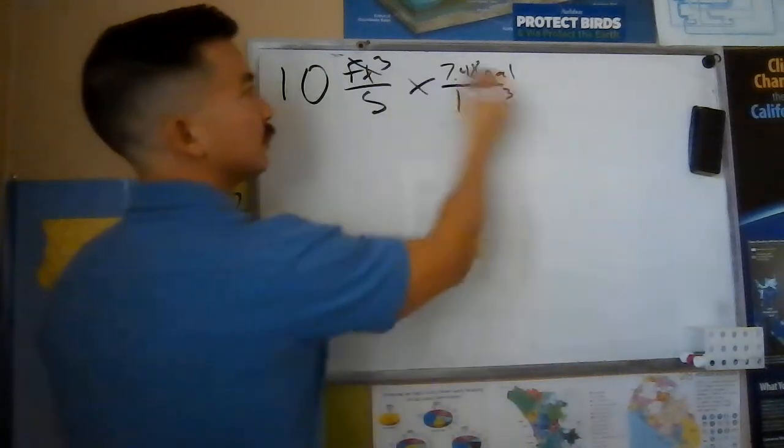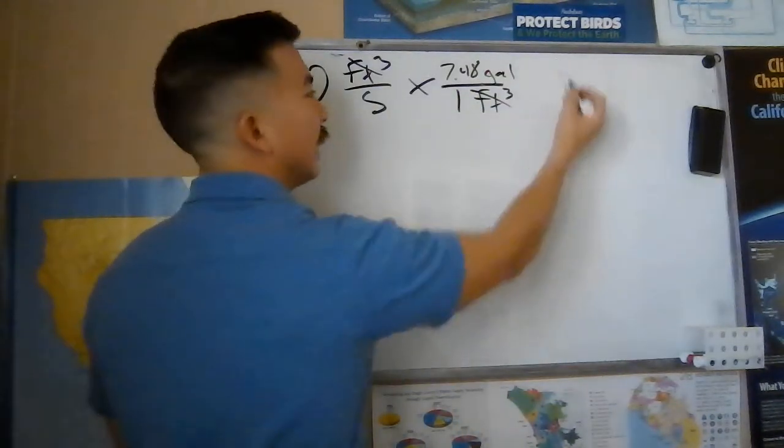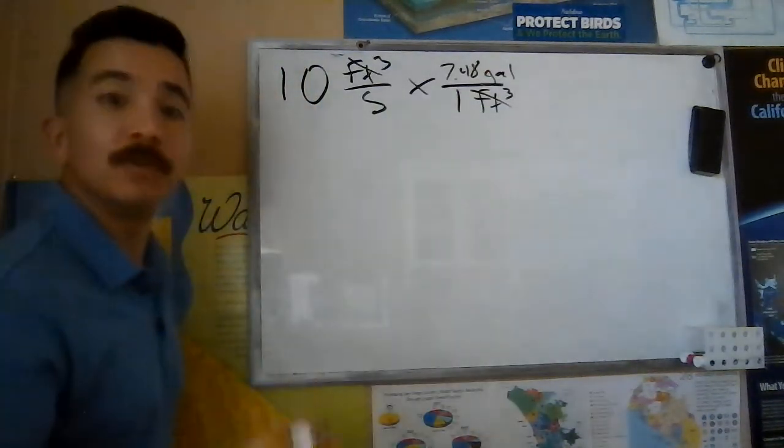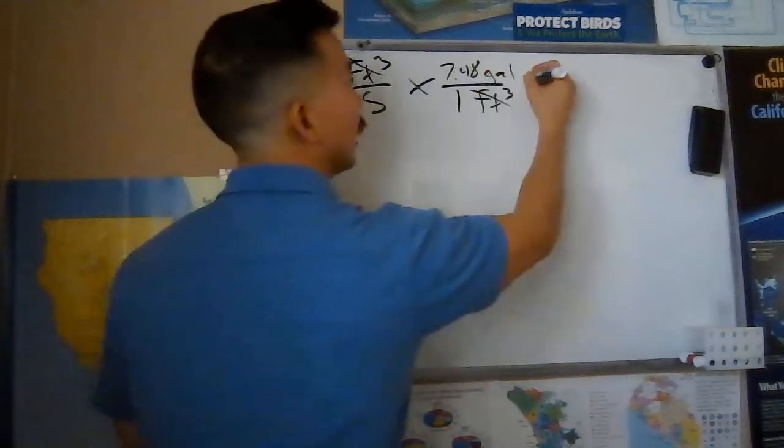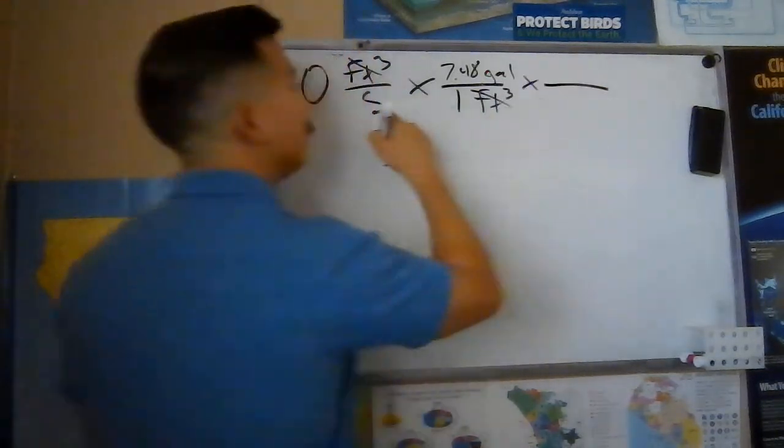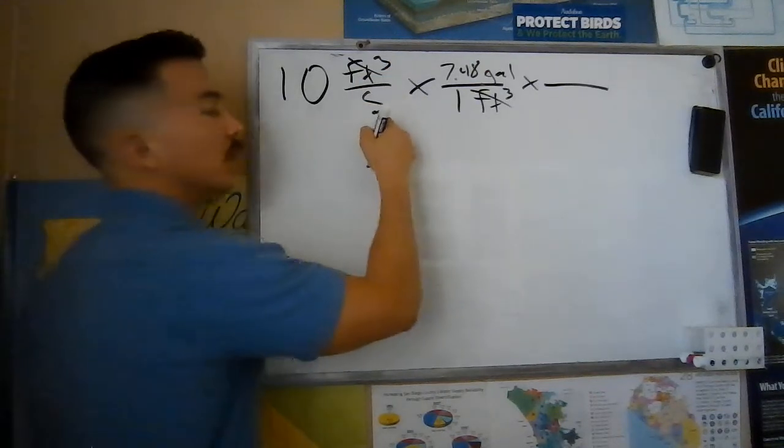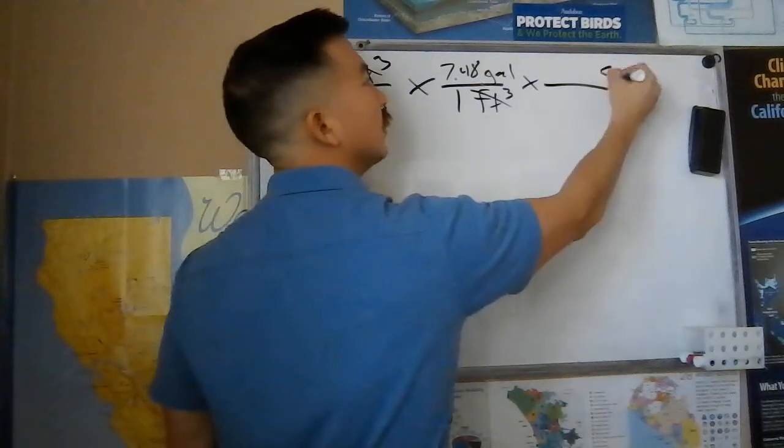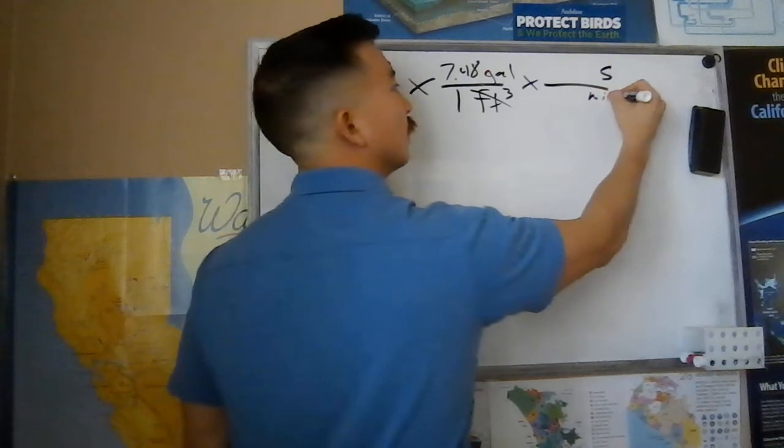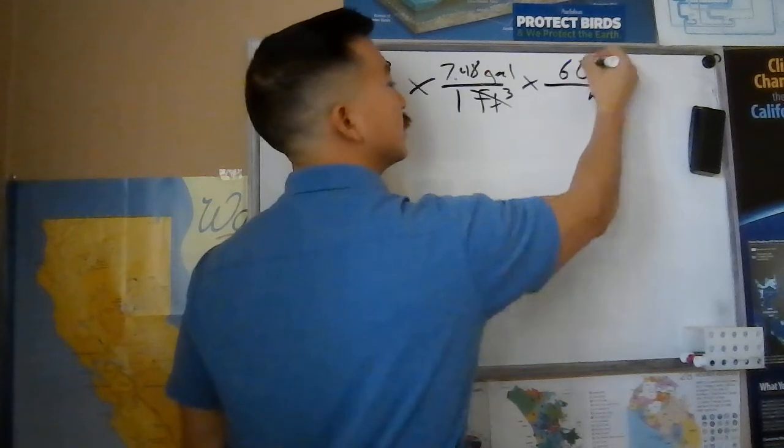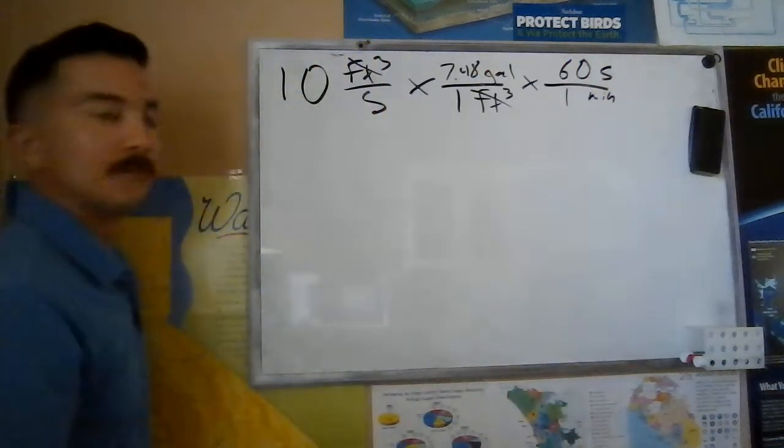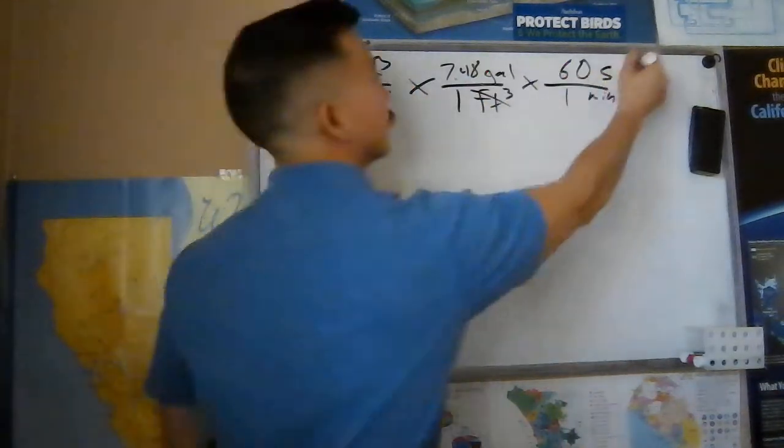Now I'm not done here. If I were to just multiply across I'd end up with gallons per second. I'm trying to get to gallons per minute. So let's make sure we tackle that second part here. Now when I'm trying to get rid of seconds, because seconds is on the bottom here, I need to put it up top over here on the opposite side. I'm trying to bring in minutes. I know there are 60 seconds for every one minute. This is going to cancel seconds.